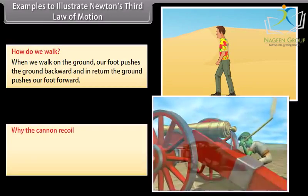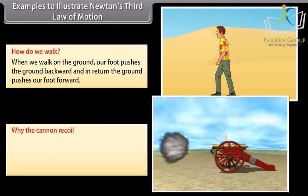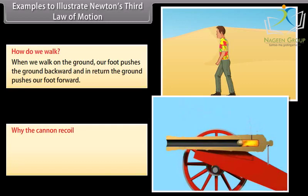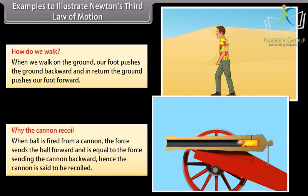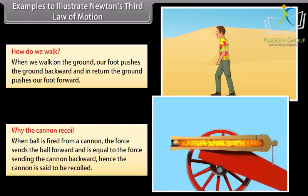Why the cannon recoil? When ball is fired from a cannon, the force sends the ball forward and is equal to the force sending the cannon backward. Hence the cannon is said to be recoiled.